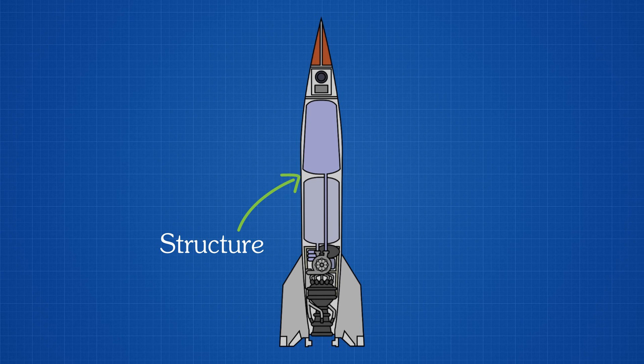The structural system is the frame of the rocket. In simple words, it is the main body of the rocket that holds other systems.